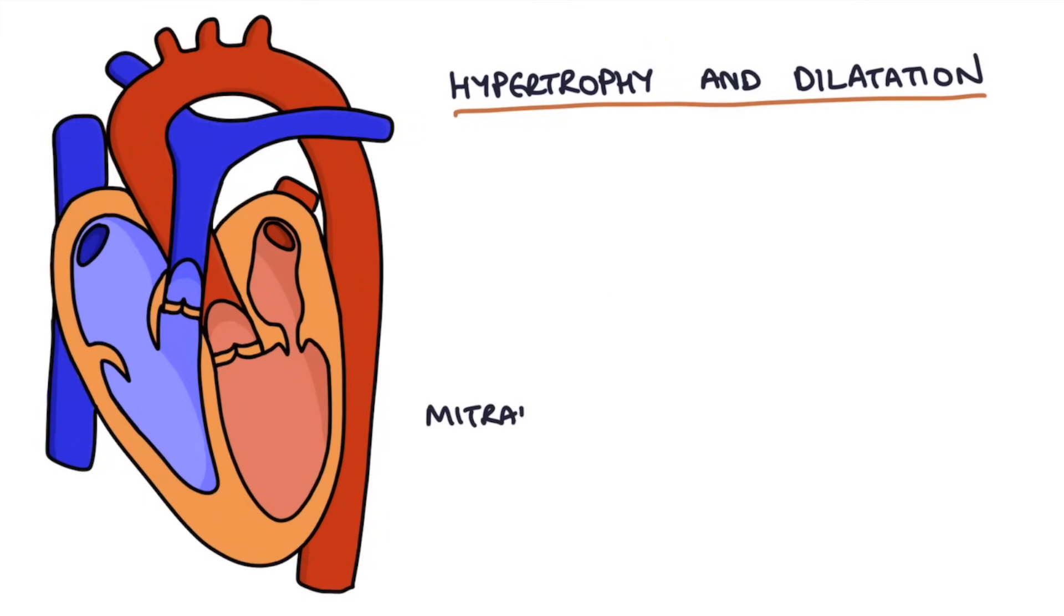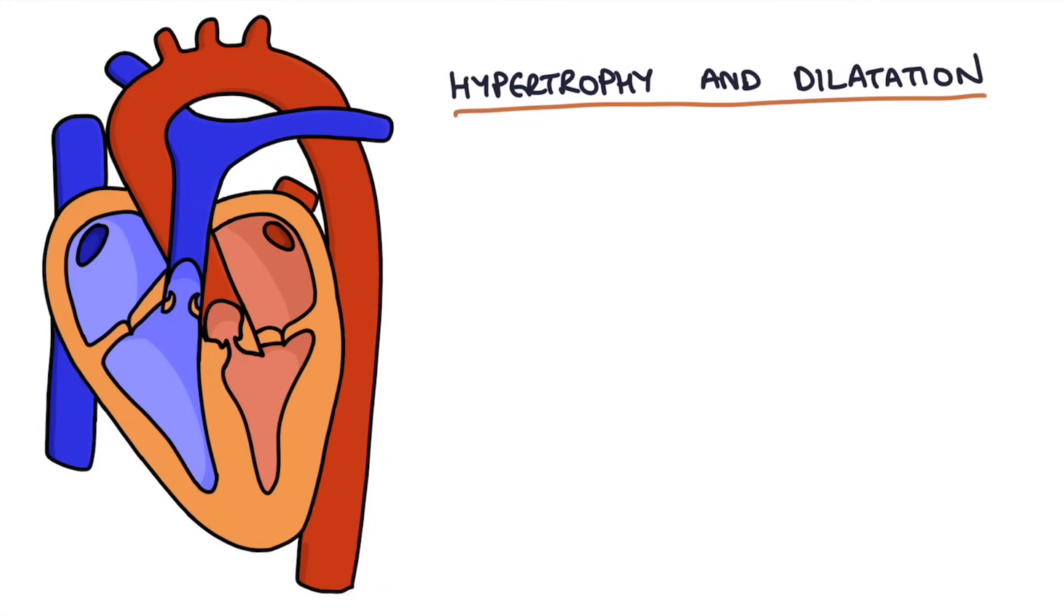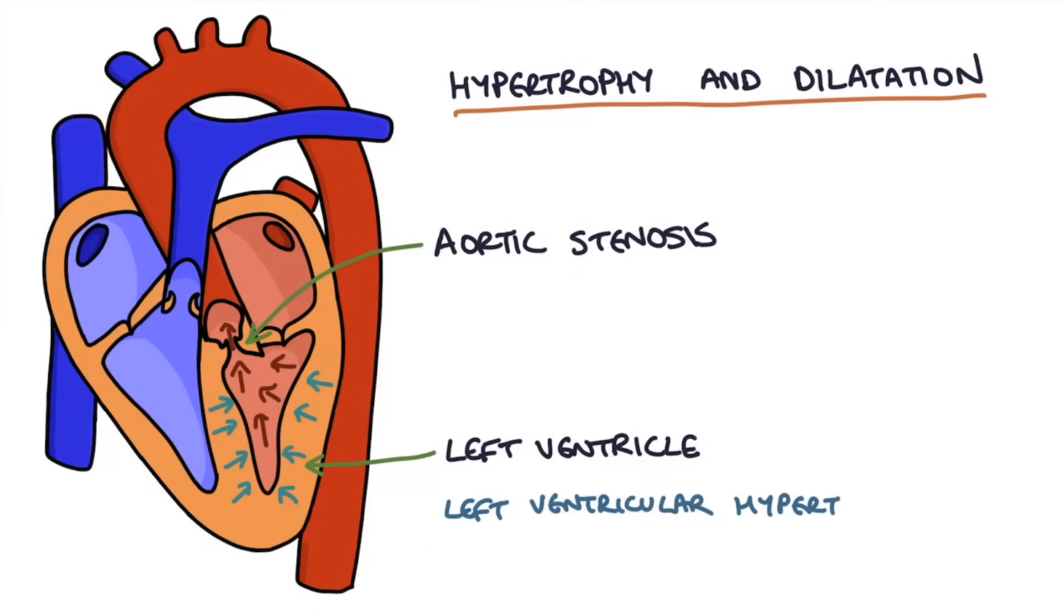If you have mitral stenosis, the left atrium is pushing really hard against that mitral valve, so you get left atrial hypertrophy. When you have aortic stenosis, that left ventricle is pushing really hard against that aortic valve, so you end up with left ventricular hypertrophy.